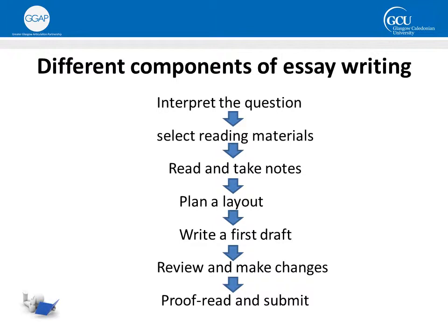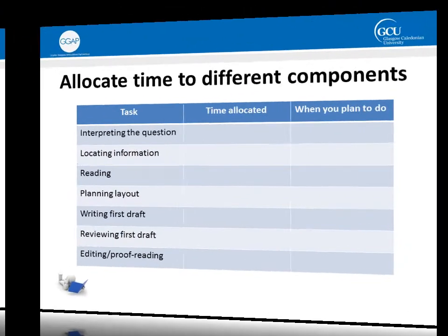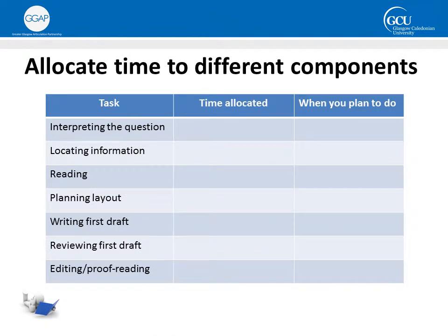As you can see, essay writing can be quite a time-consuming process, so it's important that you plan your time well in advance. A useful way of planning your time around a particular essay is to create a table like the one shown and allocate time to each individual task. Until you've got a bit more practice, it'll be hard to know how long it'll take you to complete each task, so at first it's a good idea to overestimate the time you'll need. Once you've worked out how long each task will take, the final stage in your planning is to decide when you'll work on each one.